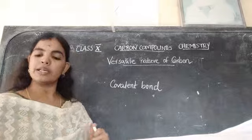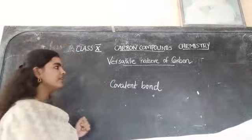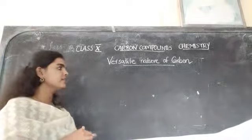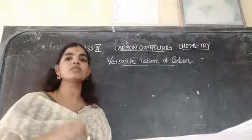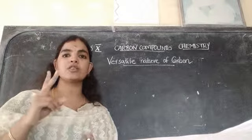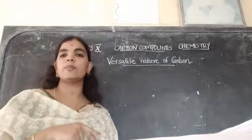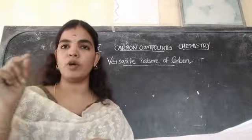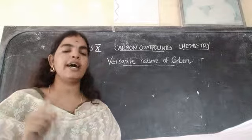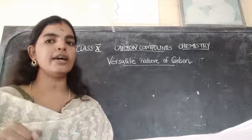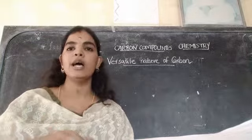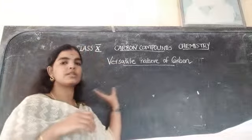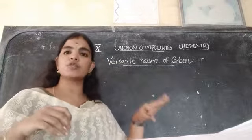So our topic is about the versatile nature of carbon. In the case of this covalent bond: if the shared pair of electrons is 1 — that is, 2 electrons — one electron given by one atom and another electron given by the other atom — we call it a single bond. If there are 2 electron pairs, we call it a double bond. And if there are 3 electron pairs, we call it a triple bond. I will discuss this topic later as it is coming in our lesson. So there are single bond, double bond, and triple bond.